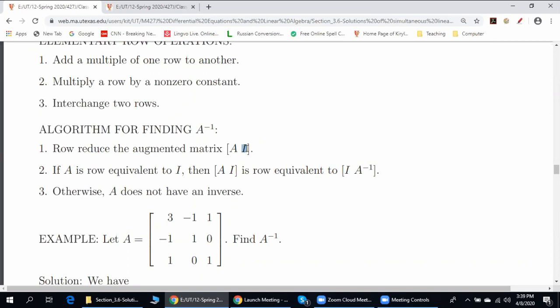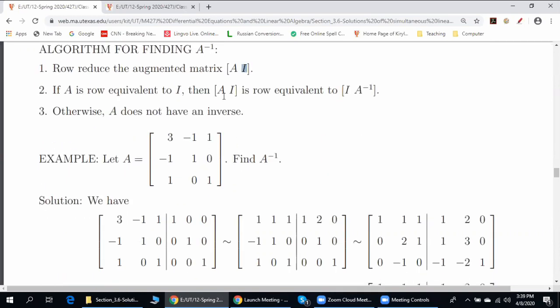Step two, apply elementary row operations to the whole matrix, like we have here. In order to obtain I on the left, over here on the left. Once the goal is achieved on the right, we get A inverse.